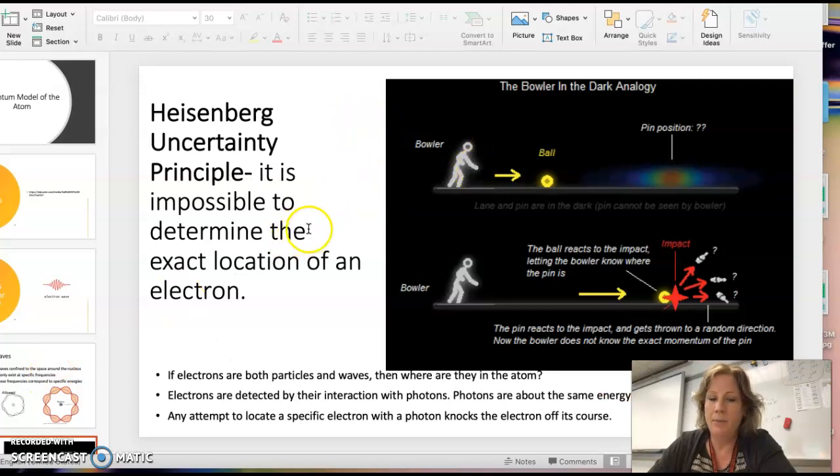Heisenberg uncertainty principle is part of this quantum mechanical model. What it's saying is that you cannot know exactly where the electron is.